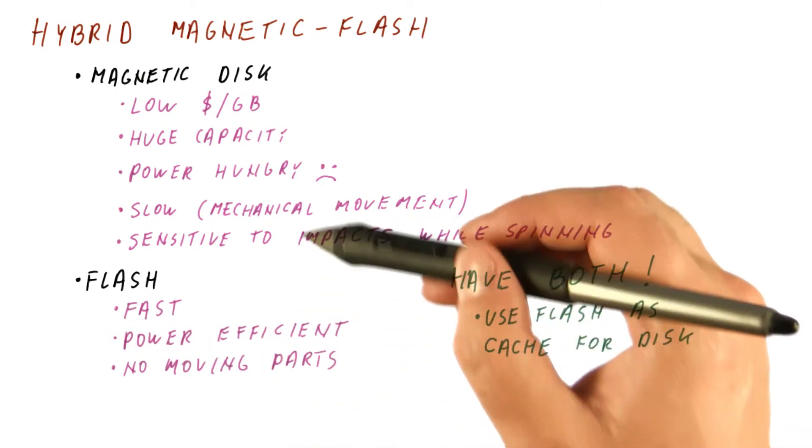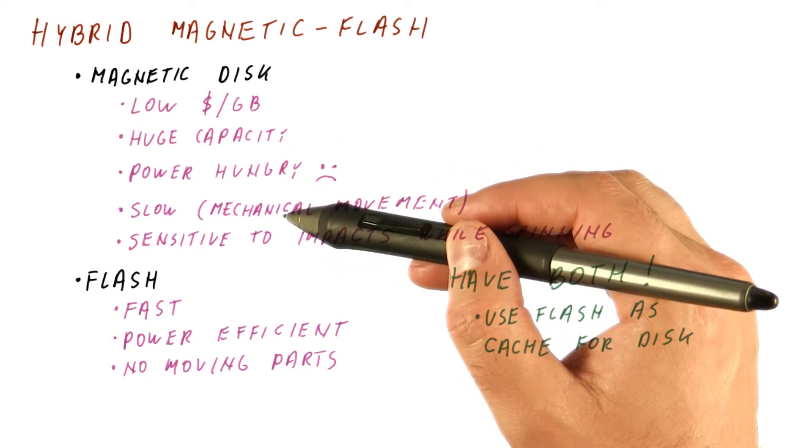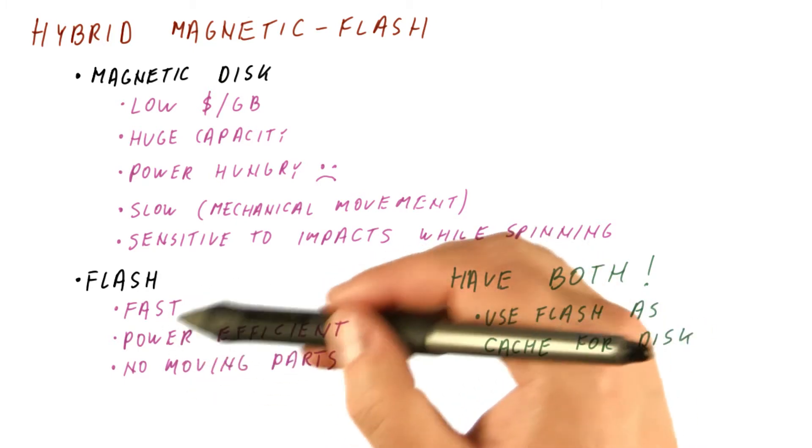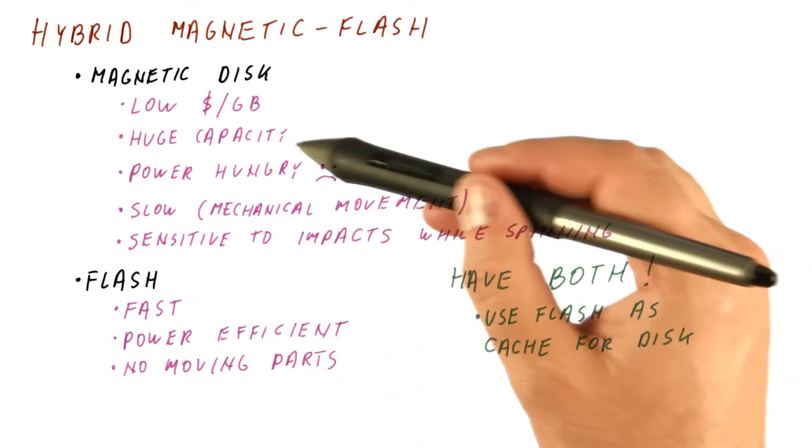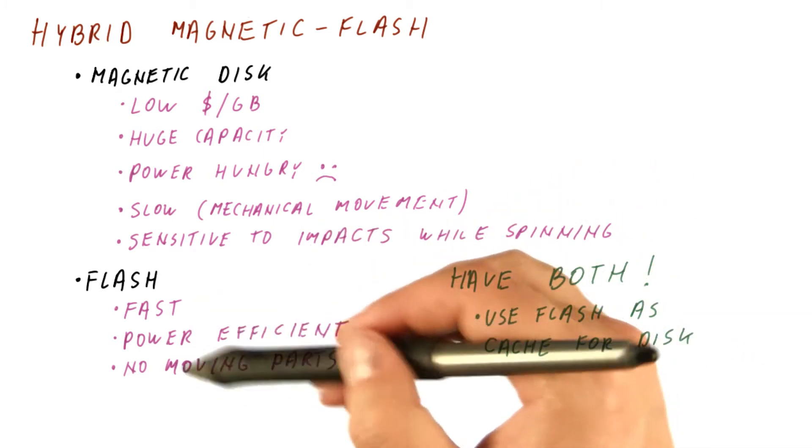Now, of course, the disk would still be spinning if we occasionally access it. But if we have enough flash to access data for even minutes at a time, we can power down the disk and spin it down, and only access it once we have a flash miss.